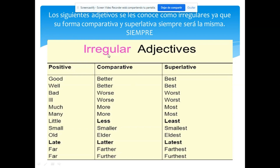Hay unos adjetivos que son excepciones ante todo, y son solamente los que están visualizando en este momento. Estos se conocen como adjetivos irregulares — es decir, a estos adjetivos nunca les vas a agregar -er ni -est, nunca les vas a agregar MORE ni MOST.